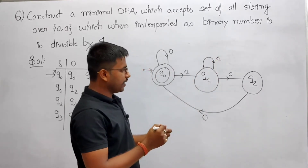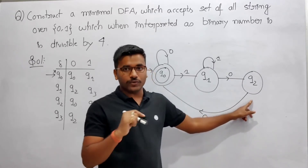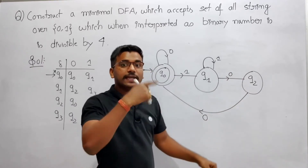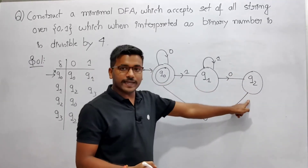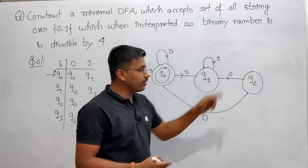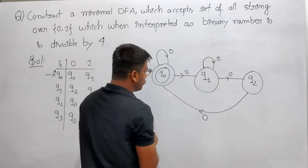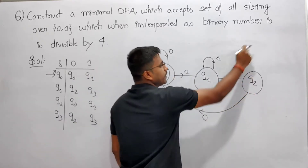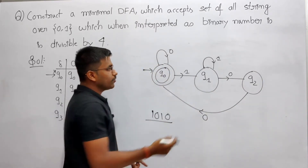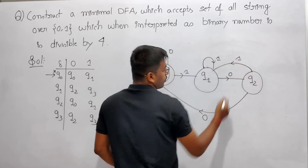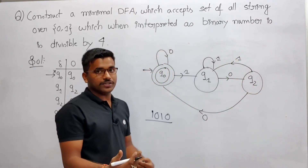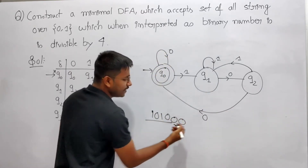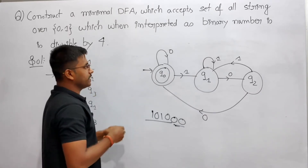In q1, on input 0 go to q2; on input 1 stay in q1. Now for q2: q2 means you got one 0 after some 1s. If you get another 0, go to q0 — accepted, ending with two 0s. If q2 gets a 1, it should go back to q1, because if we made a loop at q2, then strings like 1,0,1,0 would be accepted even though they don't end with two 0s. So on getting 1 from q2, go to q1. This is the minimal DFA.